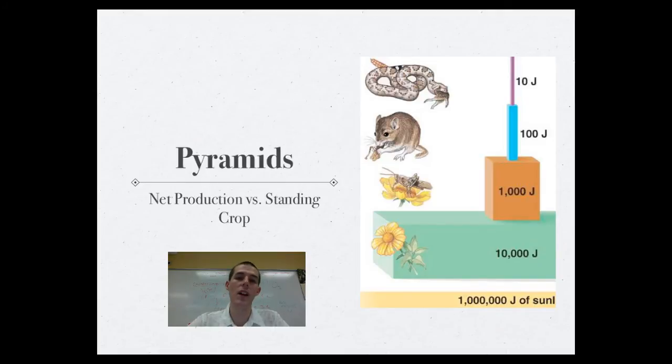After they've done that, there's only 100 joules available for our mouse there. And as that mouse goes through staying warm and metabolic processes, it burns a bunch of energy such that 10 joules of the original million joules are available for our rattlesnake. So that would be a net production pyramid that talks about the amount of energy moving.